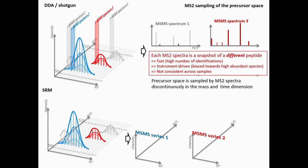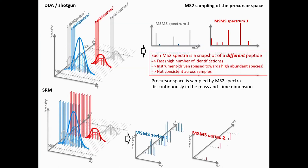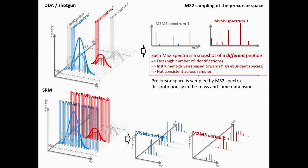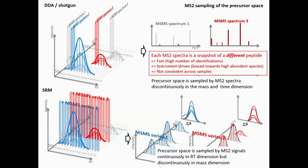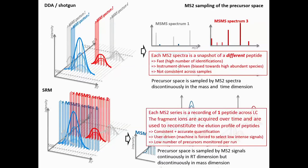In SRM, we have a different situation where we tell the instrument in advance that we're going to sample these peptides over and over again, and only these ones. These boxes depict the precursor isolation window in the Q1 of the SRM method, and what we get in Q3 space is fragment ion series. The precursor space is sampled by MS2 signals continuously in the retention time dimension but discontinuously in the mass dimension — a whole bunch of the mass dimension is not being sampled. This can be very consistent and lead to accurate quantification. It's completely user-driven and deterministic, but you may only be able to analyze a small number of precursors per run.